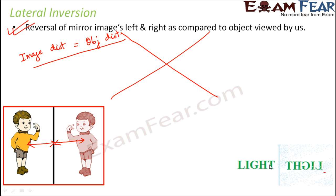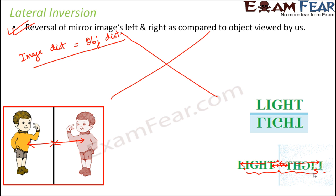When 'LIGHT' is placed in front of the mirror, the image of each letter forms at the same distance from the mirror as the letter itself. For example, T is at a certain distance, so its image forms at that same distance. This applies to every individual point of each letter — the distance of any point from the mirror equals the distance of its corresponding image point, which is why lateral inversion takes place.